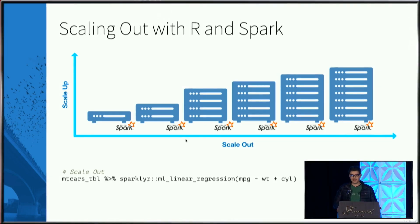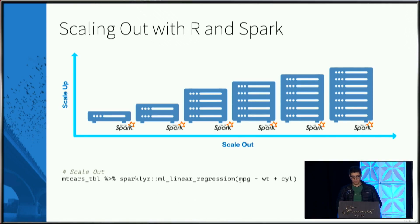Scaling out does mean you need to install Spark on each machine in the cluster, but once you have Spark running on each machine, you can run a linear regression across all the machines without having to manually run a subset of the data and then figure out how to aggregate it.